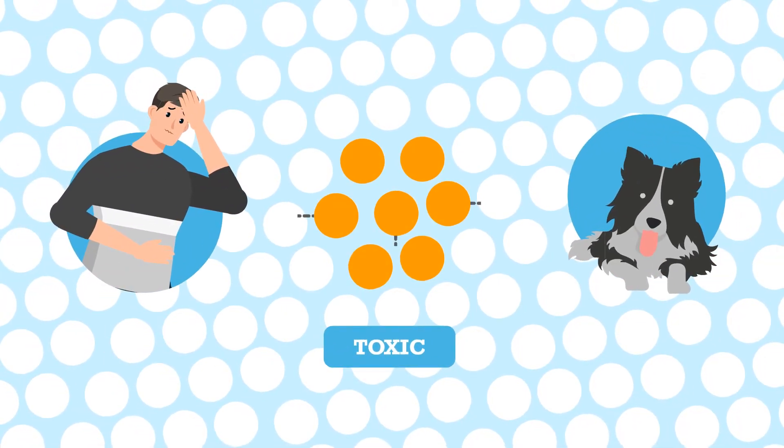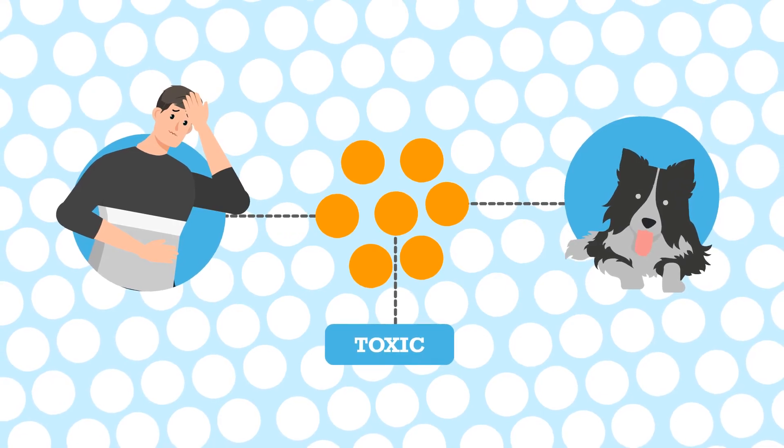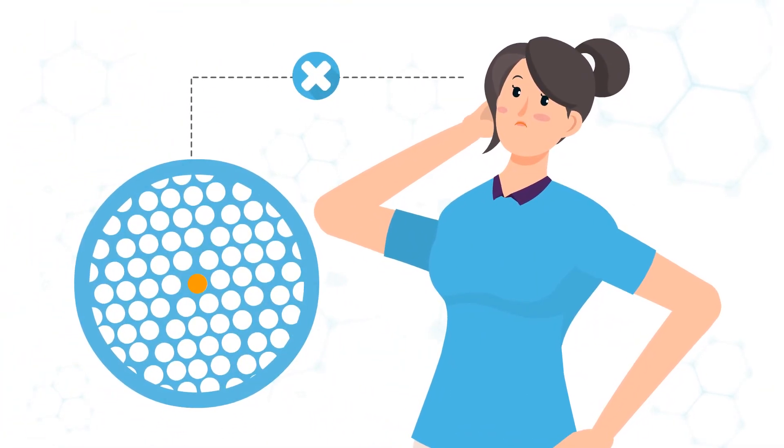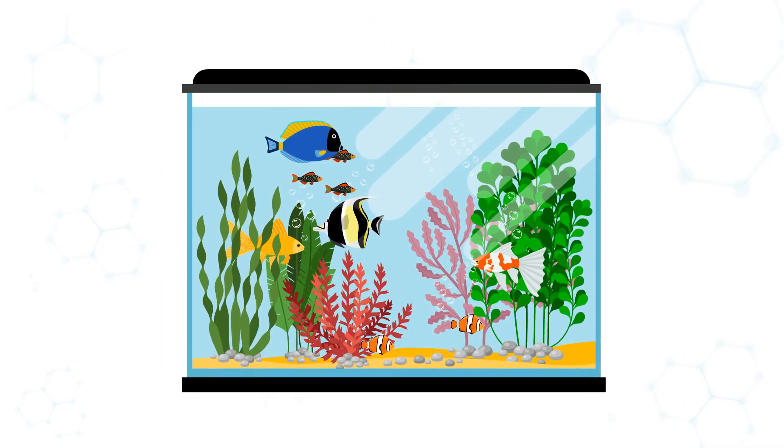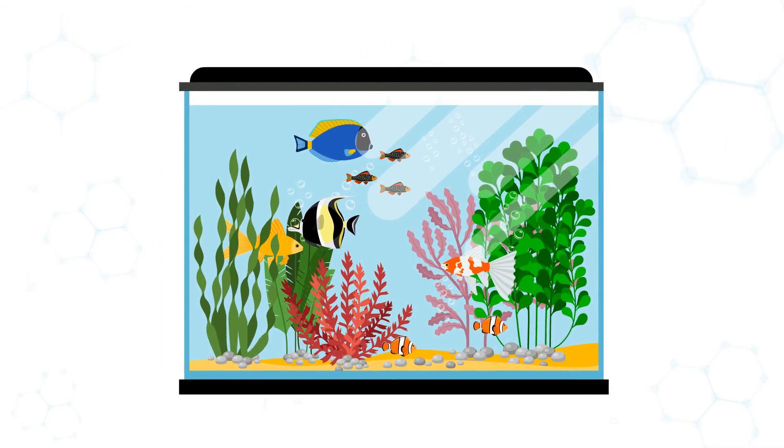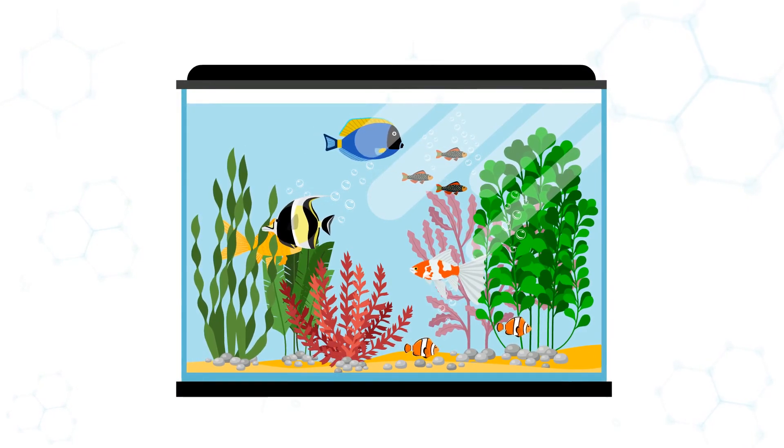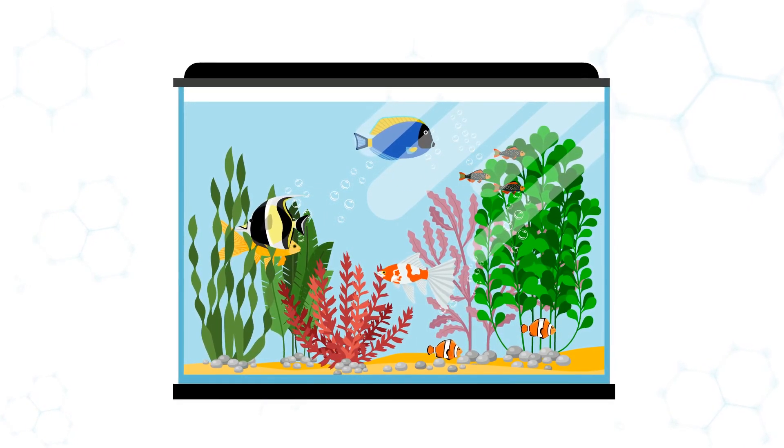And sometimes all it takes is an extremely small amount of something to contaminate water enough to be toxic to us humans and our pets. One in a million can be kind of hard to visualize. One part per million is about one drop of something in 10 gallons of water, or about what a standard 10 gallon fish tank holds.